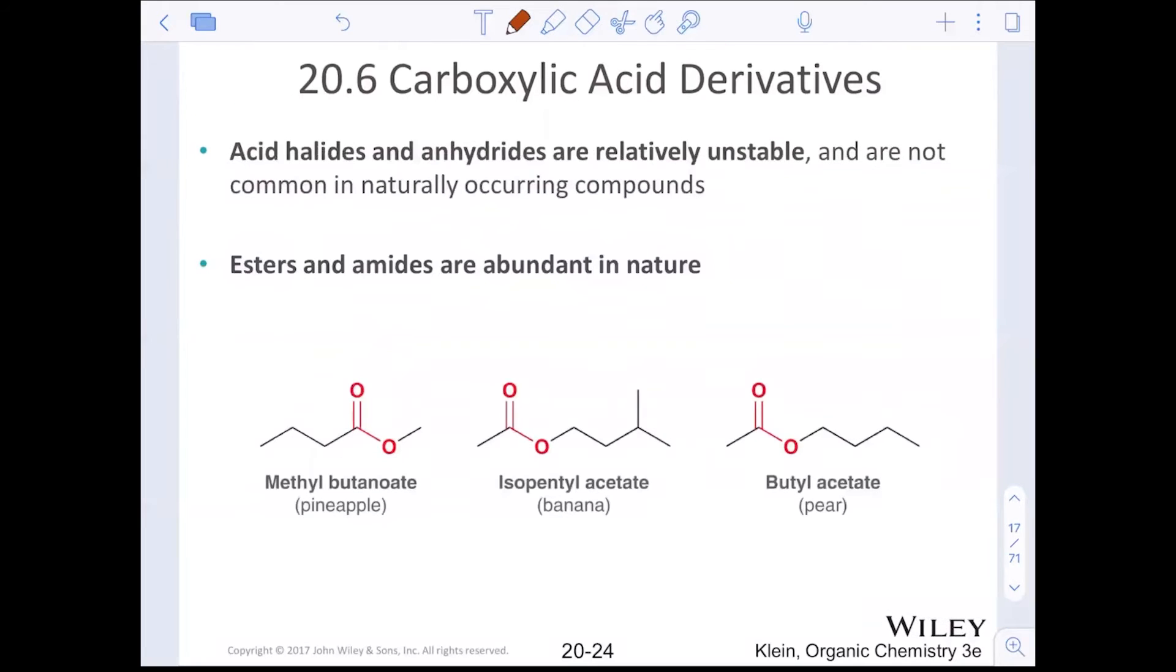We do have some varying reactivity. Acid halides and acid anhydrides are relatively unstable and more reactive than carboxylic acids. Esters and amides are more abundant in nature and more stable. These are less likely to react than the acid halides or anhydrides. So we have a wide variety of types of reactivity, and we'll see a nice flow chart diagram I've created to help us understand this reactivity.